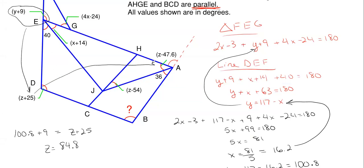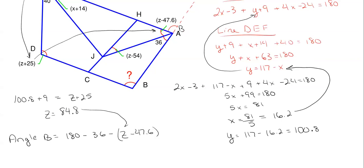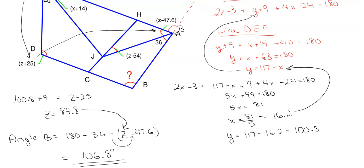Now that we have z, we can hop over and determine angle B. Since it is a straight line, angle B = 180 − 36 − z, where z corresponds to the angle on that side. Plugging in z = 84.8, and accounting for the remaining terms, angle B works out to be 106.8 degrees. That is our final answer — this angle equals angle B in question due to the parallel lines.